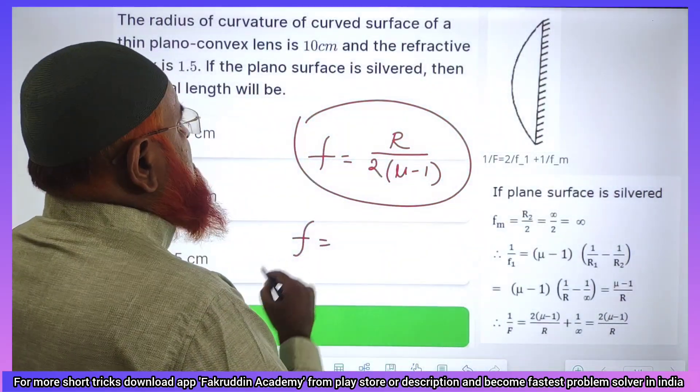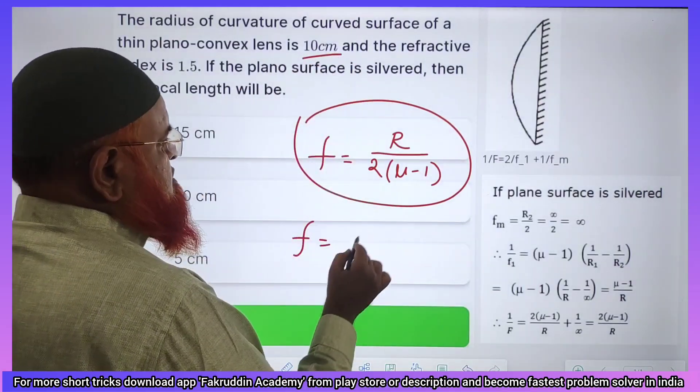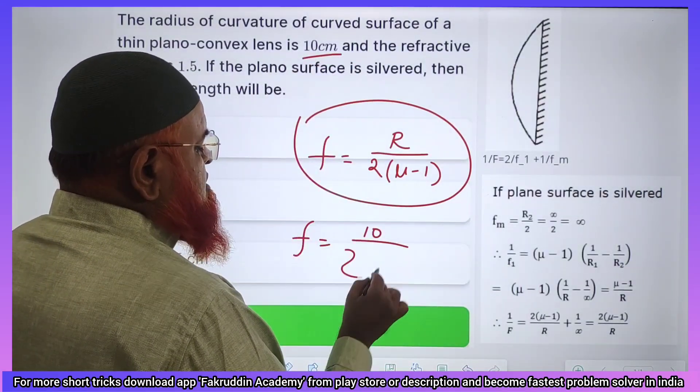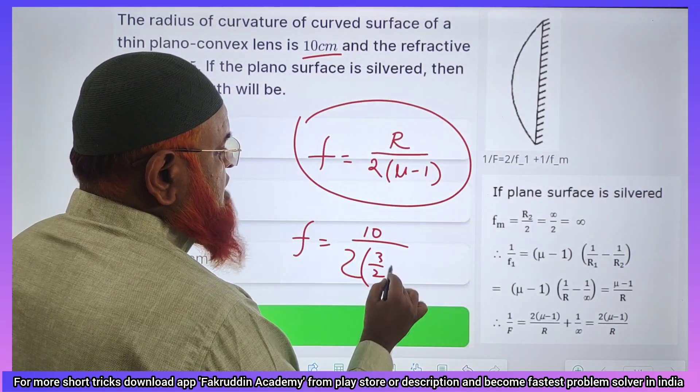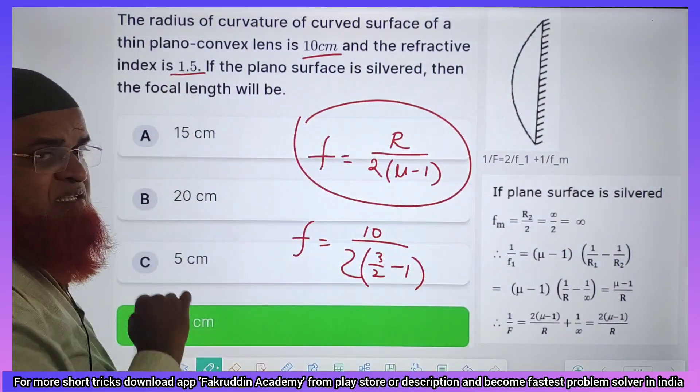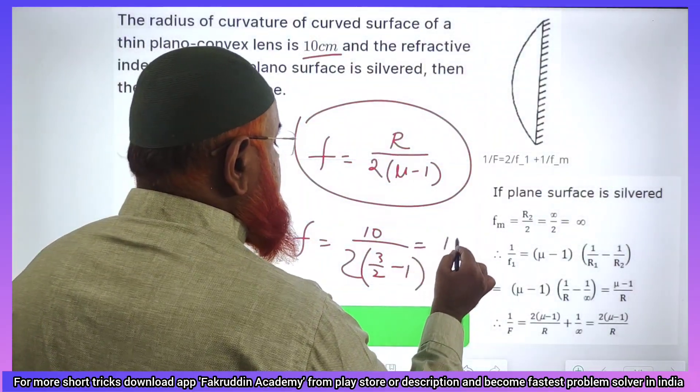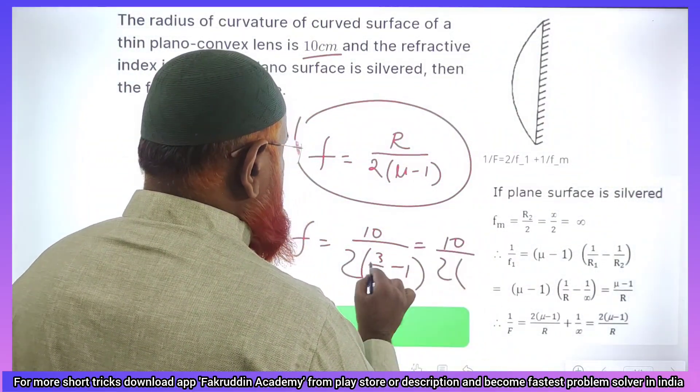You can just say f is equal to R. And what is R given in the problem? 10. So 10 by 2 into 3 by 2 minus 1, because he has given the refractive index as 1.5 which is nothing but 3 by 2.